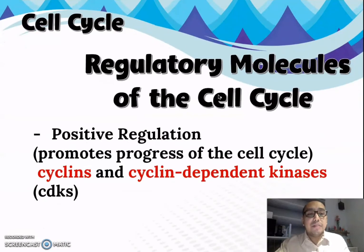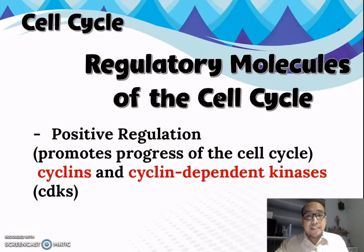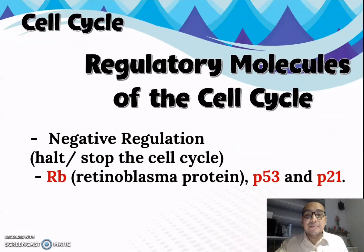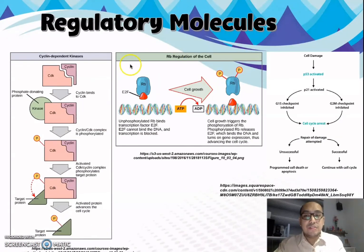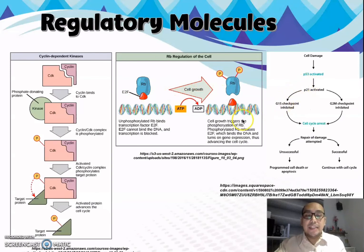We also have regulatory molecules of the cell cycle — intracellular molecules that aid in the cell cycle. Positive regulatory molecules promote progress of the cell cycle, such as cyclins and cyclin-dependent kinases, or CDKs. Negative regulatory molecules help stop the cell cycle, including the RB or retinoblastoma protein, protein P53, and protein P21.